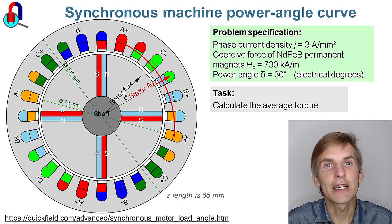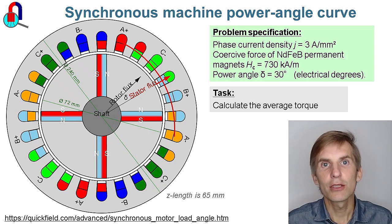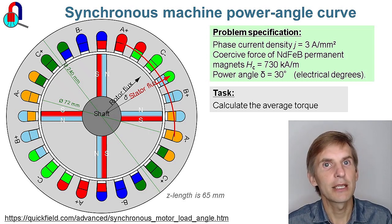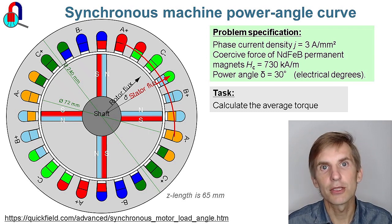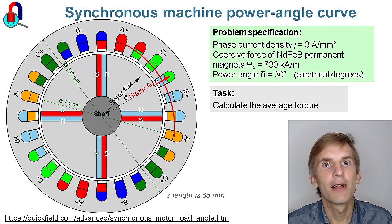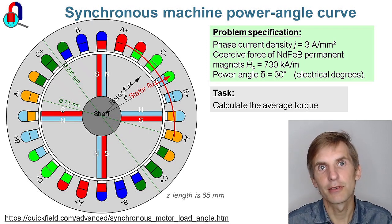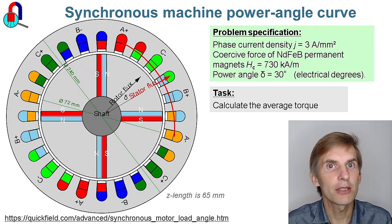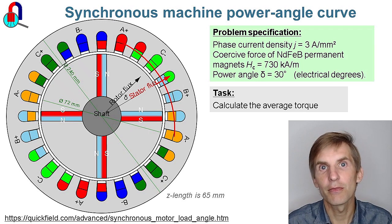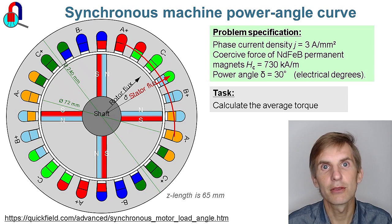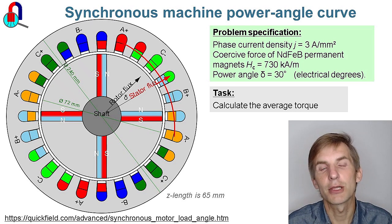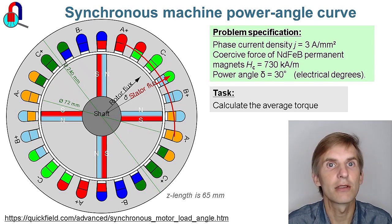My task is to find the average torque value. I'm going to simulate a set of DC magnetic problems in QuickField with different rotor positions and different momentary values of the current in the stator winding. QuickField features an application programming interface, so I can automatically generate problems, edit the geometry model, adjust material properties and field sources, and analyze the results.